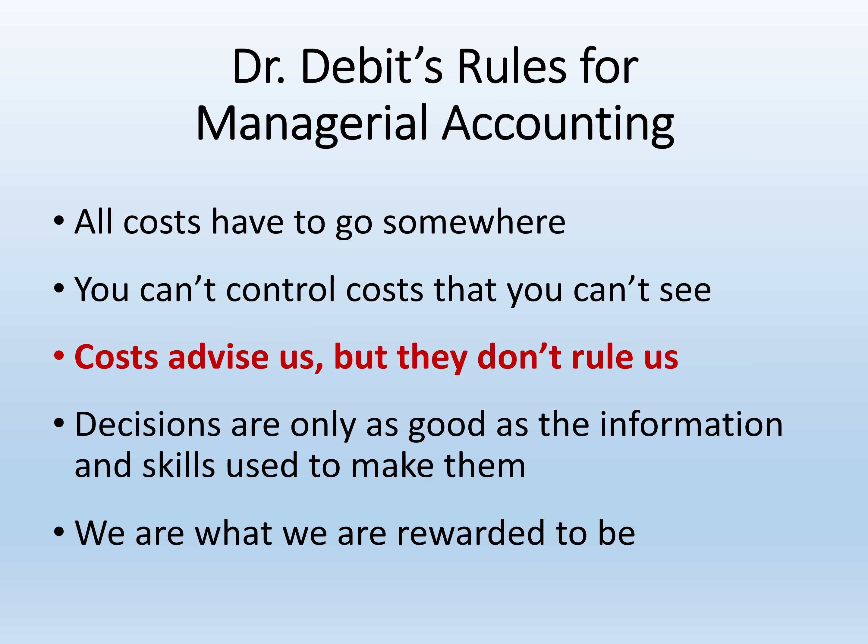The second rule is that you can't control costs that you can't see. Therefore, a lot of work in managerial accounting is designed to make costs visible so that managers can make smart decisions about what to do with those costs and whether they continue to make sense for the firm. The third rule is that costs advise us, but they don't rule us. For example, if you go to a restaurant, you don't have to order the least expensive thing on the menu — you might decide you want something else and that the price is worth it.